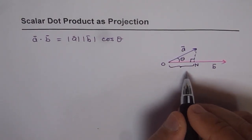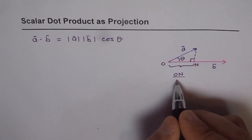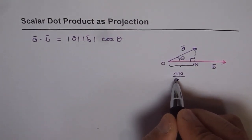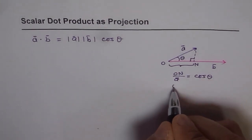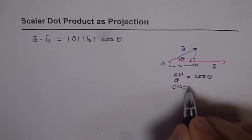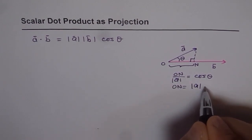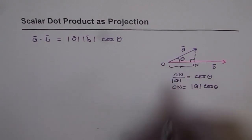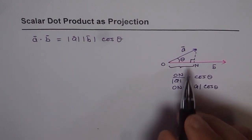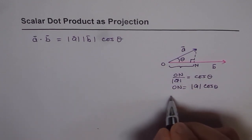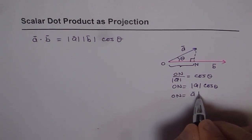Then this length ON will be: we can say ON over the magnitude of A equals cos of theta. Therefore, ON equals magnitude of A times cos of theta. That is this length ON. So basically, ON is the projection of A on B. So we can write ON as the projection of A on B.